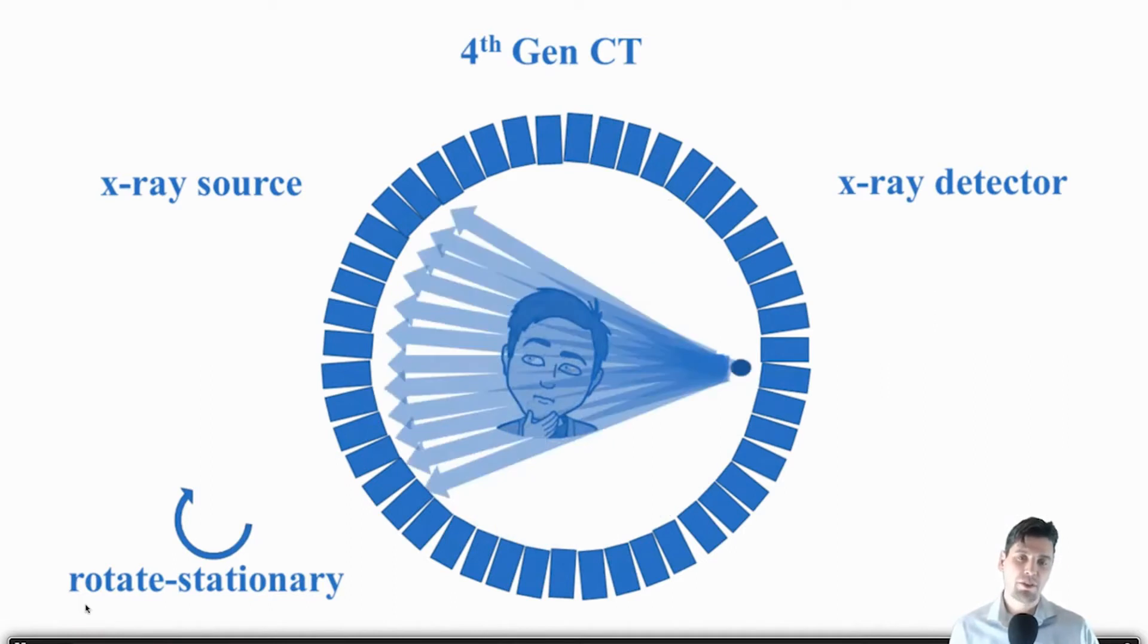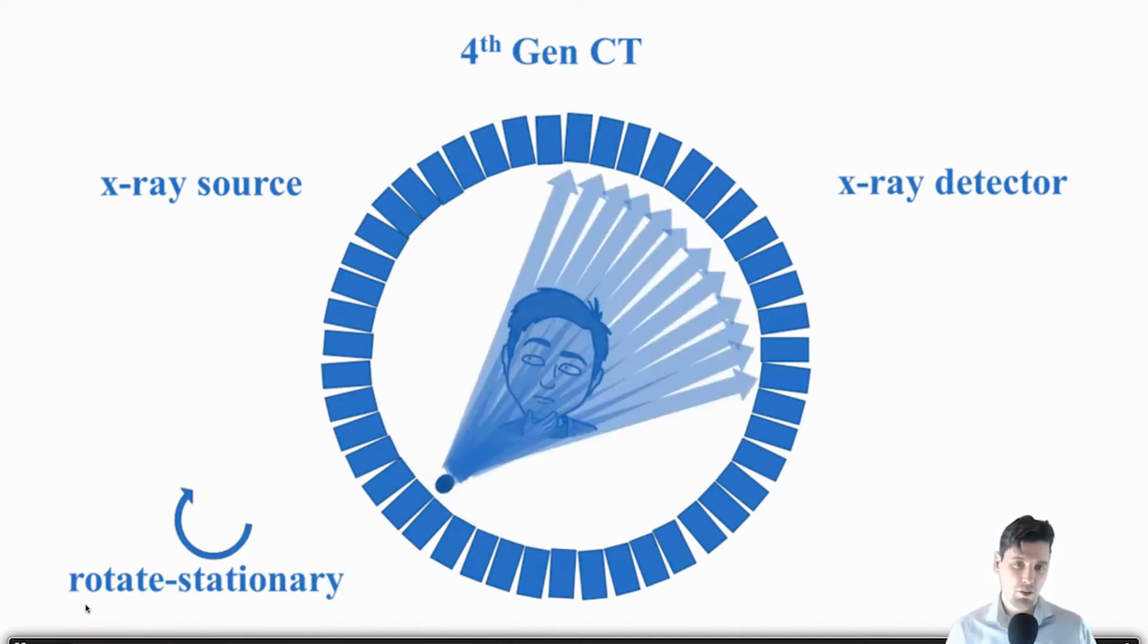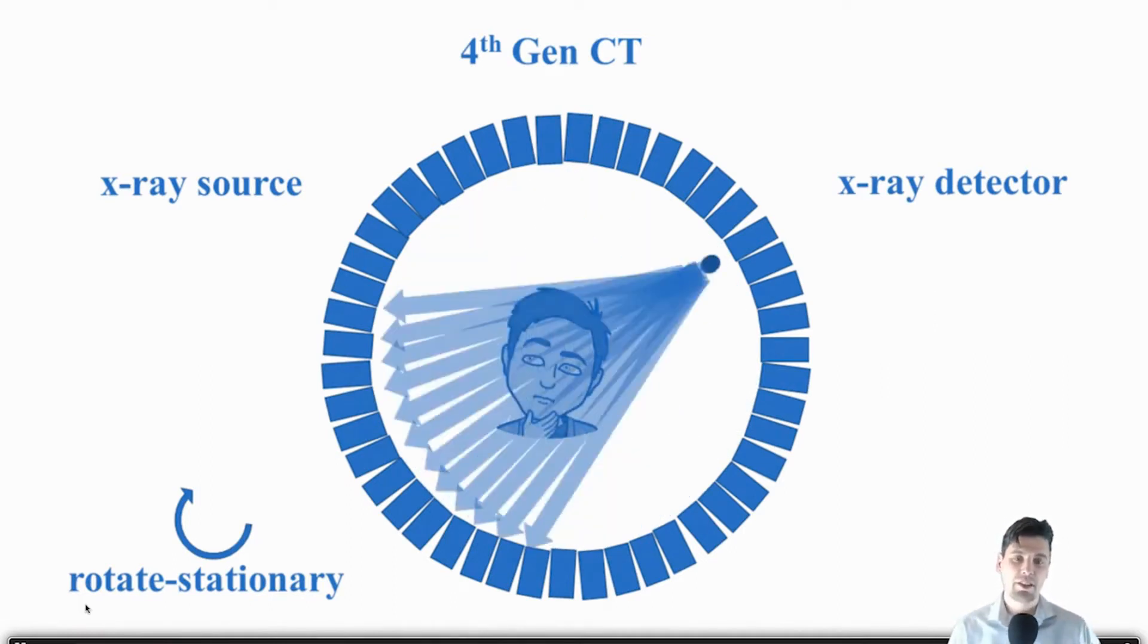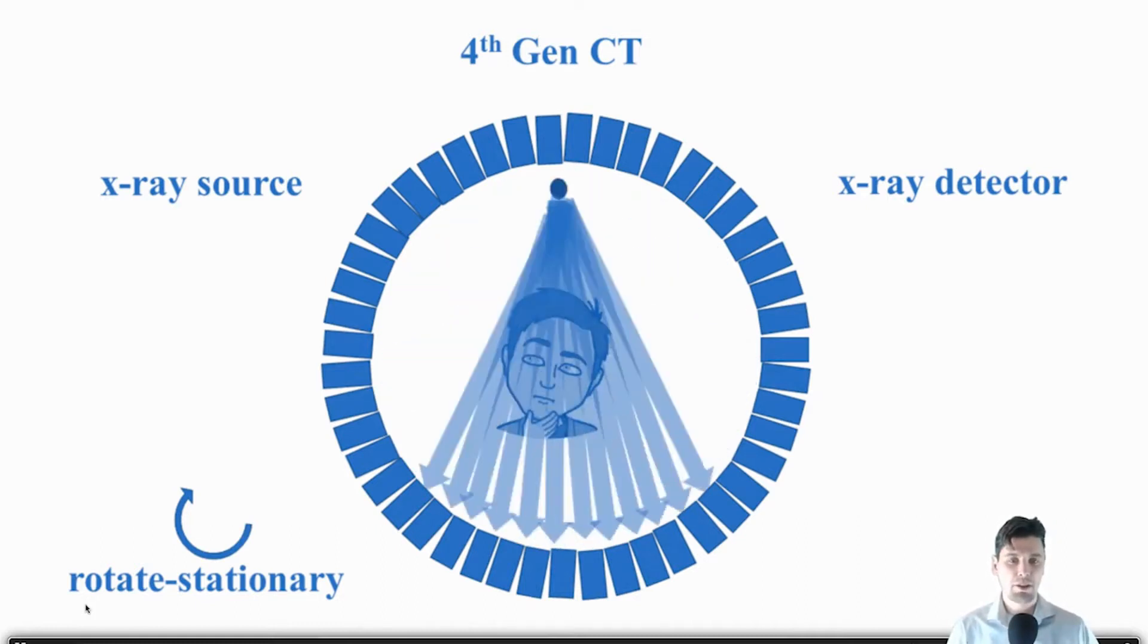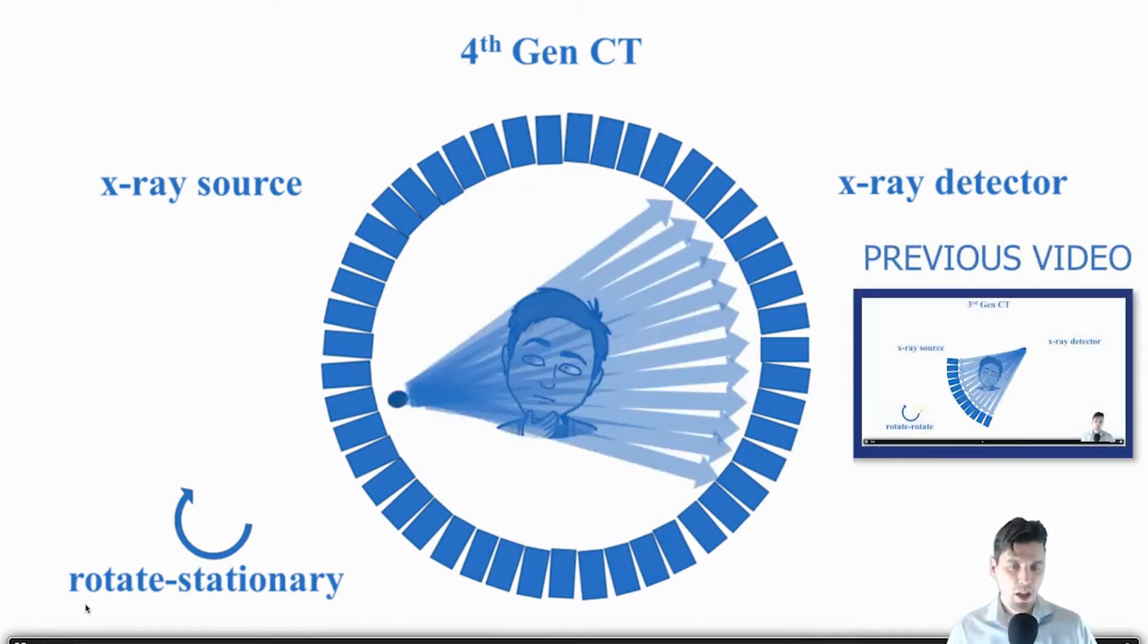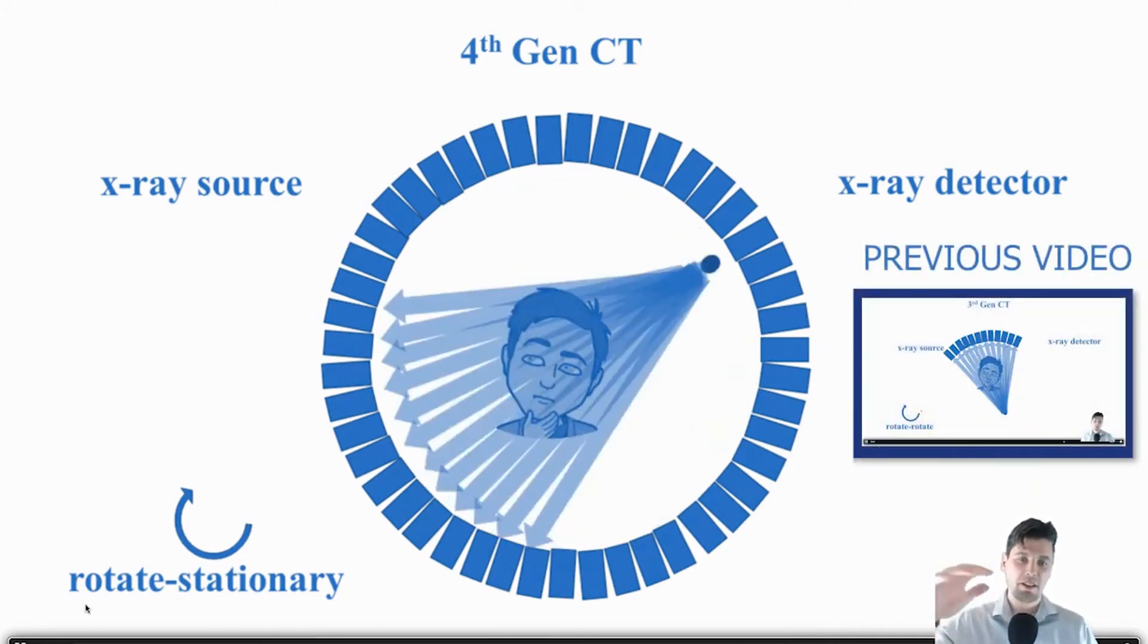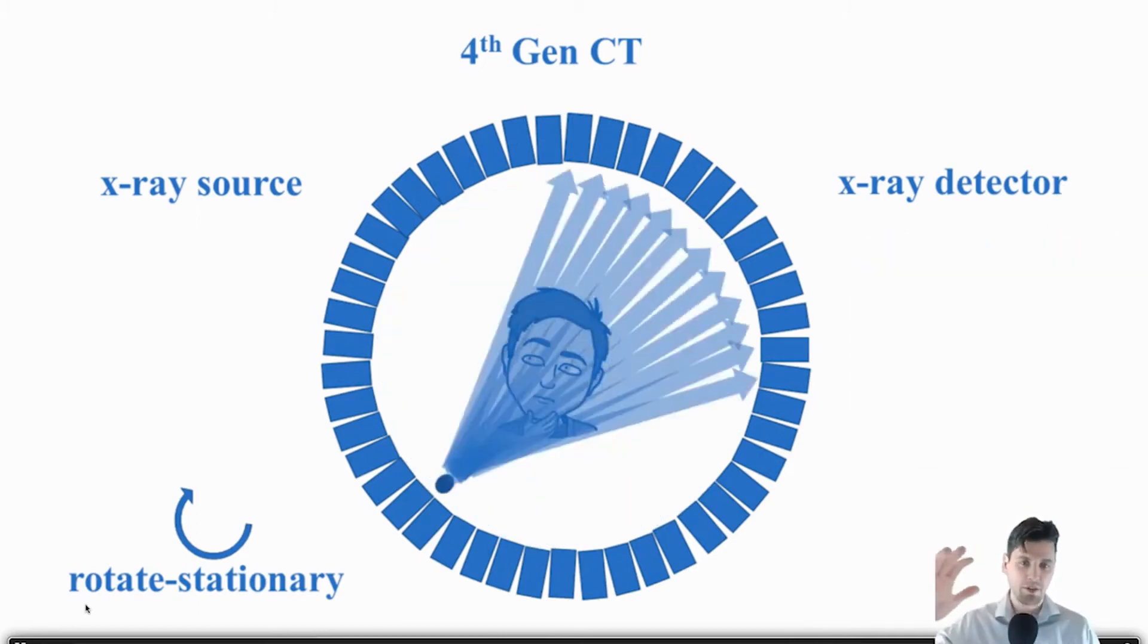And in third generation CT that was the first time that there wasn't translation needed during the scanning. So fourth generation CT is a little bit different than third because if you remember in third generation CT both the source and detector rotated and they were constantly across from one another.